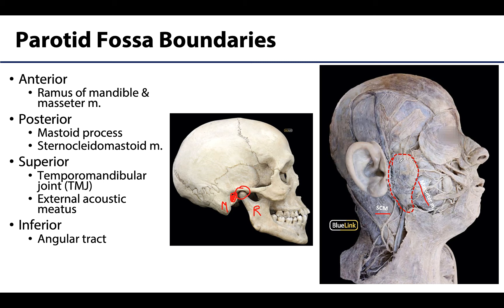Lastly, the inferior boundary is the hardest to conceptualize and see — this is the angular tract. In fact we can't see it on either one of these images. The angular tract is a dense fascial band located between the parotid and the submandibular glands. The submandibular gland would be located in the submandibular triangle, kind of deep to the platysma region right in there. So think of a fascial band between those two glands — that is where the angular tract would be located — but it's very often removed during dissection.